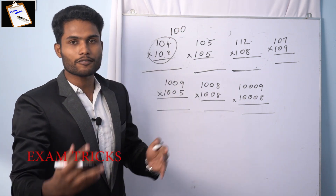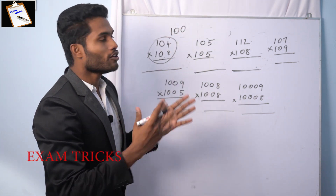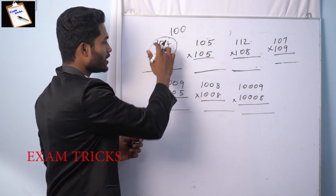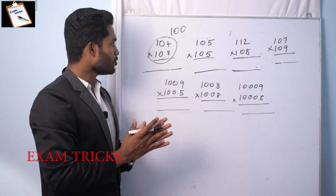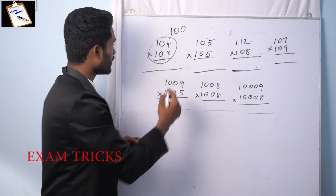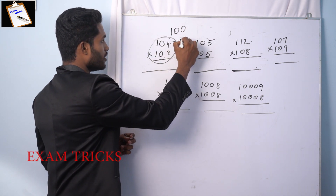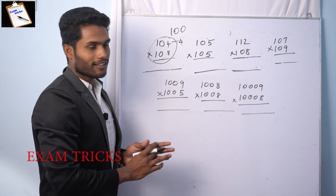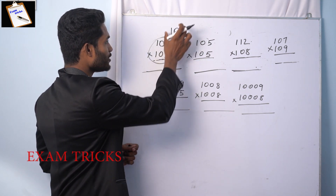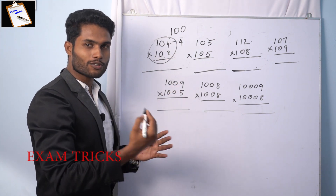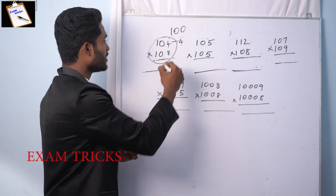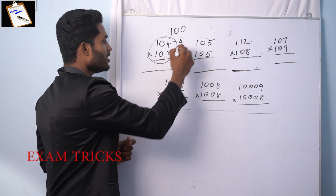So, base 100 is 100. What is the difference? What is the difference between 100 and 104? The difference is 4. What is the difference between 100 and 108? The difference is 8.